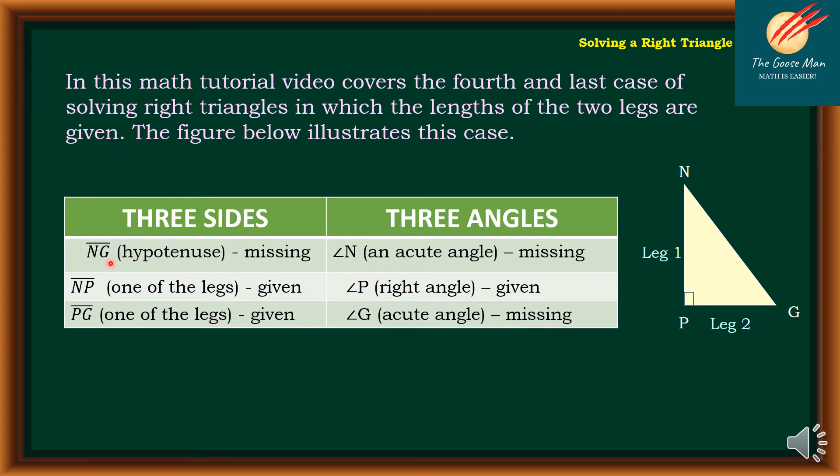So we have NG, hypotenuse is the missing. NP is one of the legs, is given. PG is one of the legs, is also given. However, on the three angles,